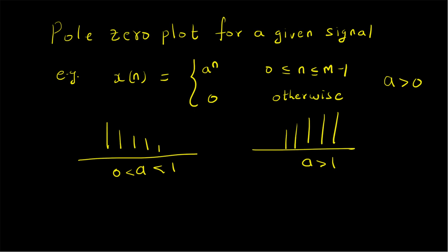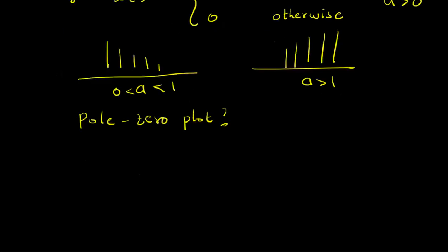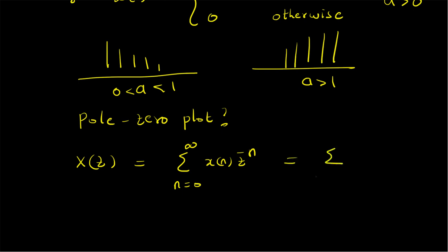The question is: what is the corresponding pole-zero plot in the z-plane? To construct the pole-zero plot, first we need to know the z-transform of this signal. We consider the z-transform X(z) defined as the sum from n=0 to infinity of x[n]·z^(-n), since we are talking about causal signals. Now x[n] is basically a^n only from n=0 to M-1, so this summation becomes the sum from n=0 to M-1 of a^n · z^(-n).